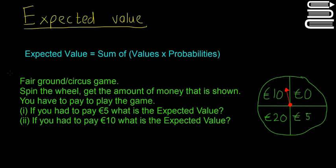So in a fairground or circus game, you have to spin the wheel and then you get the amount of money that is shown. So here's the wheel here on the right: 10 euro, 0 euro, 20 euro, and 5 euro. Depending on what the spinner lands on, that's how much money you get.